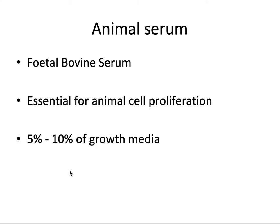One of the essential components of animal or mammalian cell culture is serum. Serum can be of different types; the one usually used is called fetal bovine serum. It comprises about 5 to 10 percent of the growth media and is essential for animal cell proliferation — without serum, most cells don't grow and will simply die.